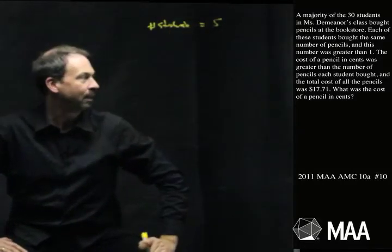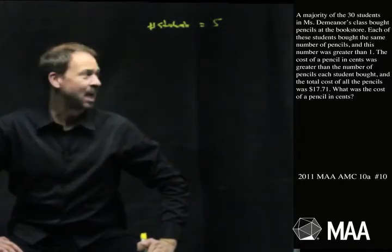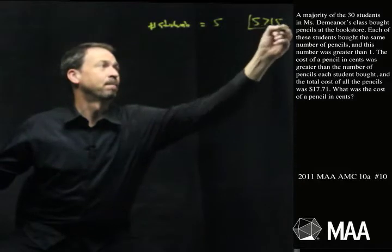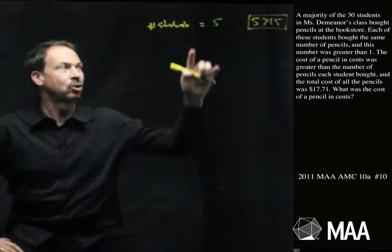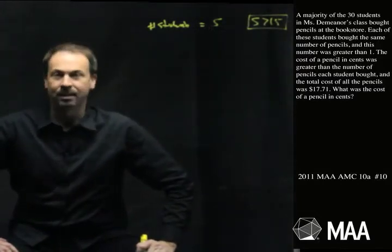And we're told that the majority of the class bought pencils. So S must be at least, what, more than half? So half of 30 is 15. So I guess S is bigger than 15. Alright, I guess that's the first sentence in math speak. There's some students, S of them, more than half of them, more than 15. Alright, second sentence.